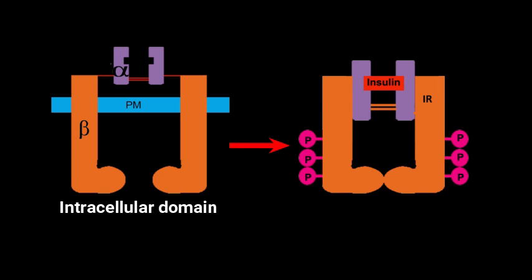Two of these alpha-beta heterodimers come together: one side contains alpha and beta, and the other side also contains alpha and beta. These two are held together by disulfide bonds between the alpha chains.